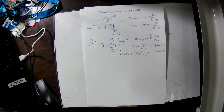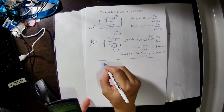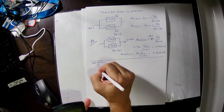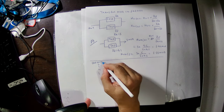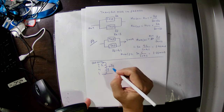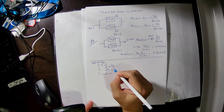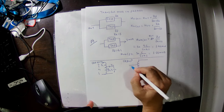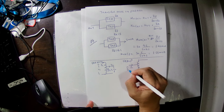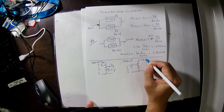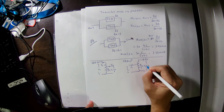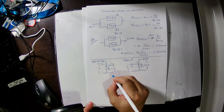Now the autotransformer. A step-down autotransformer has V1 and V2 with current I1 entering and I2 leaving, with the common winding carrying I2 minus I1. A step-up autotransformer has the common winding carrying I1 minus I2. The turns ratio satisfies N1/N2 equals V1/V2 equals I2/I1.